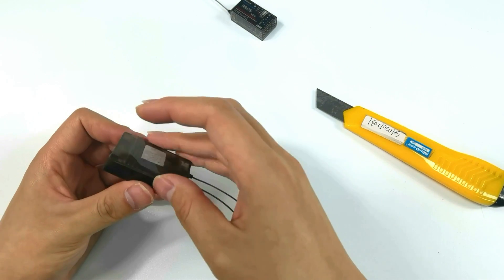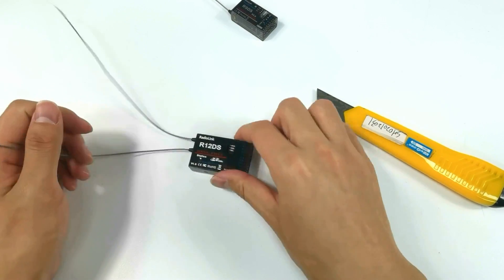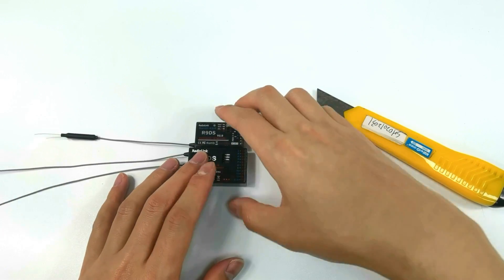Put the board inside the shell and cover the other shell to fix the board. The antenna replacement of R12DS is done.